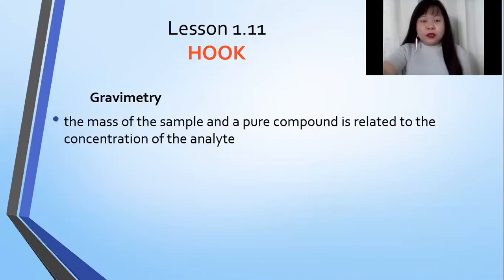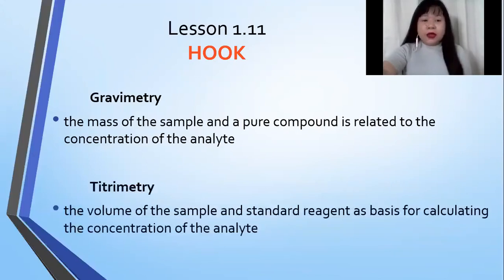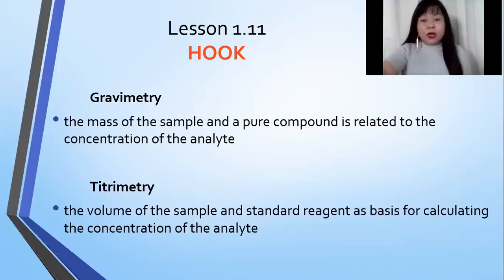In the previous module, we learned about gravimetry — a technique where the mass of the sample and the pure compound is related to the concentration of the analyte. Titrometry, on the other hand, is a technique where the volume of the sample and standard reagent is used as the basis for calculating the concentration of the analyte.